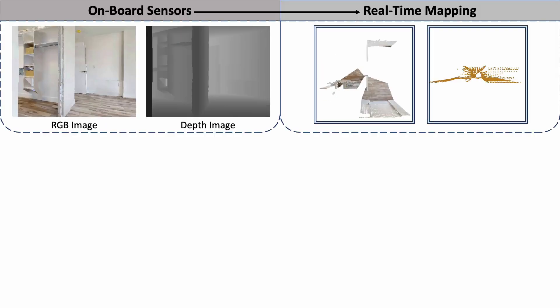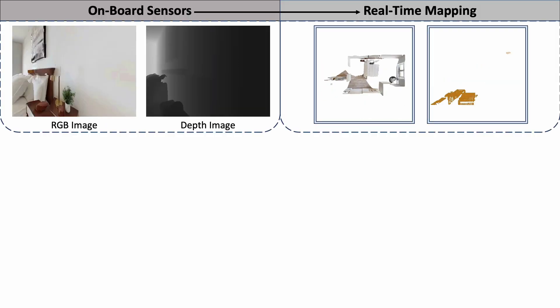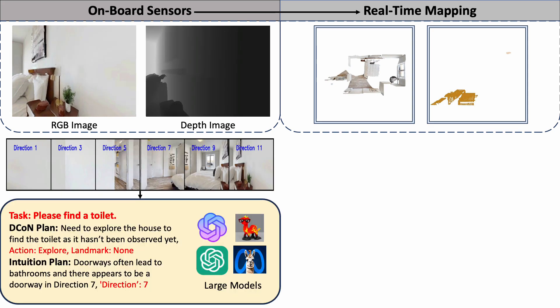Here we provide a detailed illustration of how InstructNav works. First, as the robot continuously receives RGBD observations, the robot will estimate its location and build a semantic point cloud map in real-time. Then, our method will based on a panoramic image and the map information to make plans. The dynamic chain of navigation plans an action and a landmark, and a vision-language model is utilized to choose the best direction.